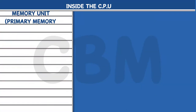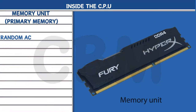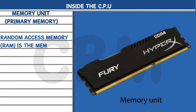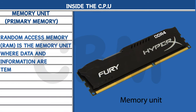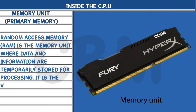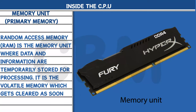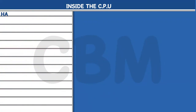Memory Unit / Primary Memory — Random Access Memory (RAM): RAM is the memory unit where data and information are temporarily stored for processing. It is volatile memory, which gets cleared as soon as the computer is switched off.